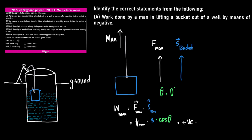Let us take the first statement, which says: work done by a man in lifting a bucket out of a well by means of a rope tied to the bucket is negative. Let us visualize the condition. We have the ground level, a well containing water, a man standing with a rope hooked to the bucket, and he's lifting it up. If we isolate the bucket, the first force acting on it is gravity, mg acting downwards. The second is tension in the rope, acting upwards. And there is an external force by the man, pulling the bucket upwards.